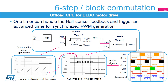This slide shows how the six-step drive, also called block commutation, is managed with the STM32 timer. It consists of chaining two timers, one handling the three hall sensor signals while the other manages the PWM generation synchronized with the rotor angular position, generating six successive steps. The first timer operates in clear-on-capture mode, triggered by the three inputs.